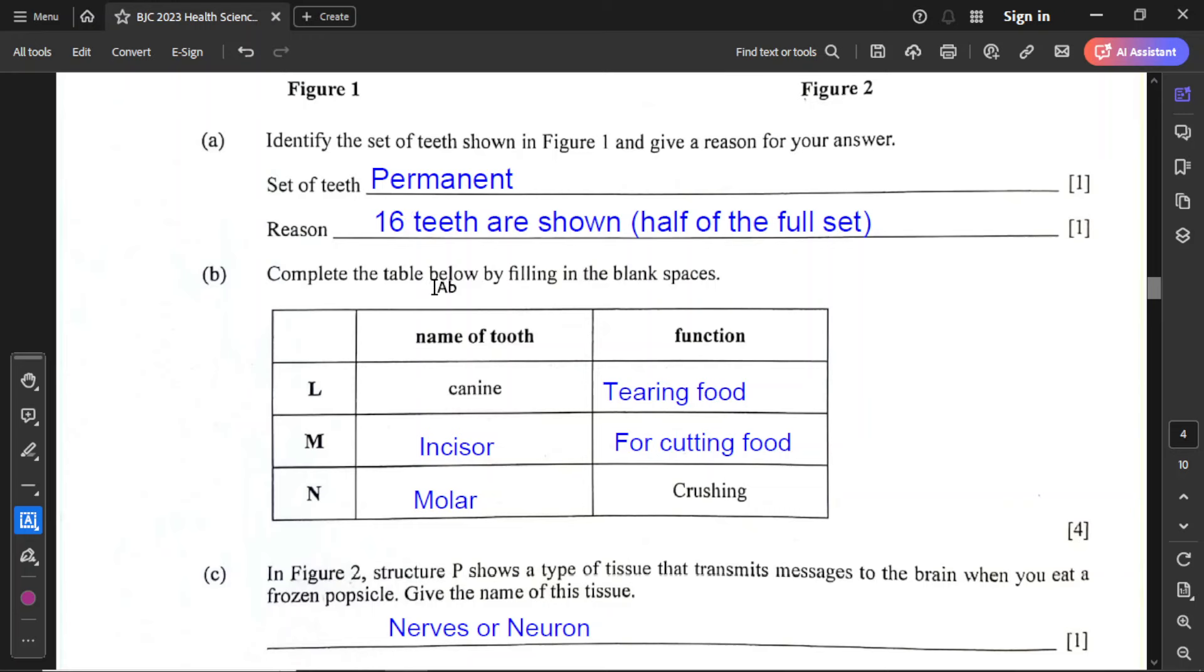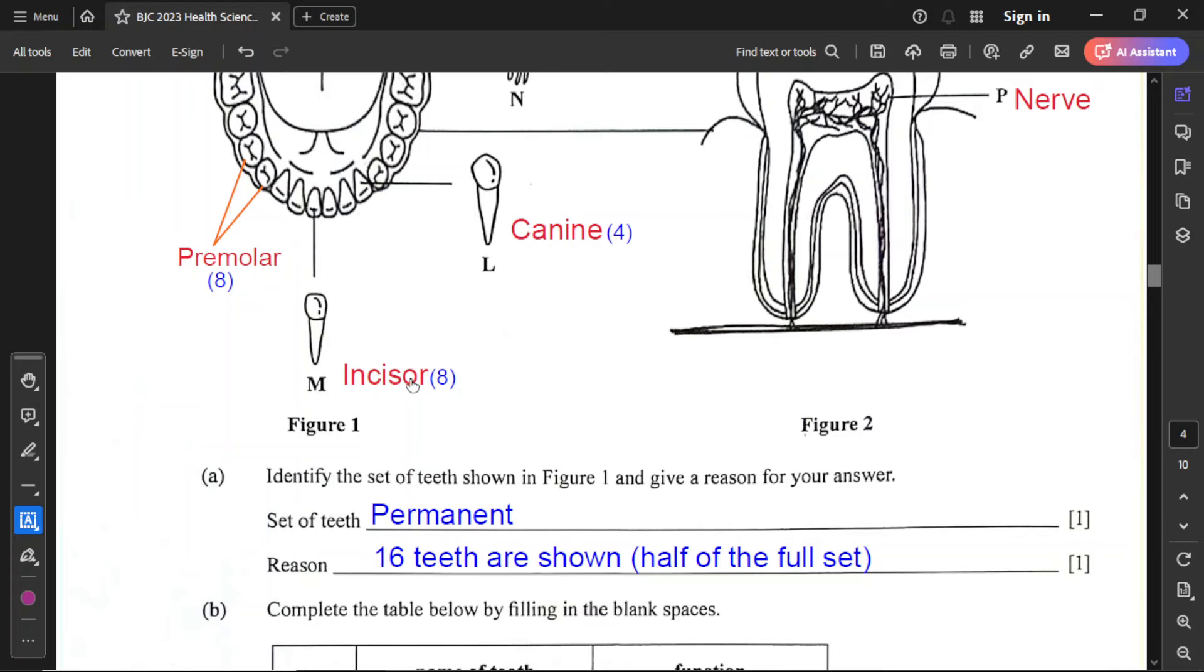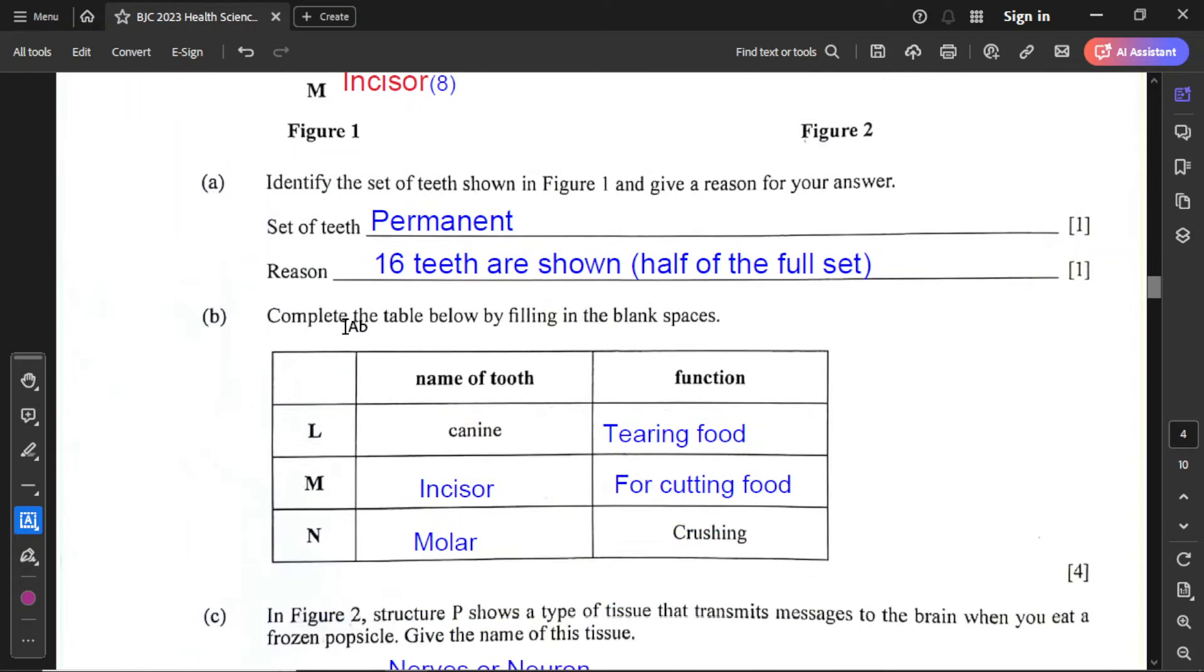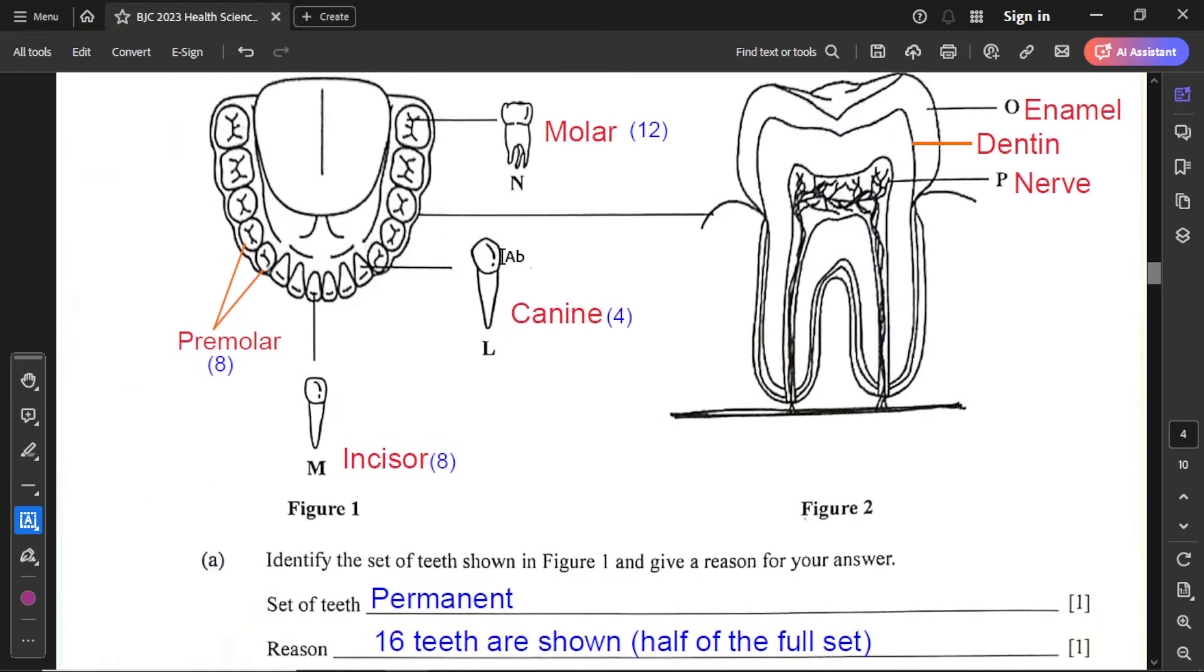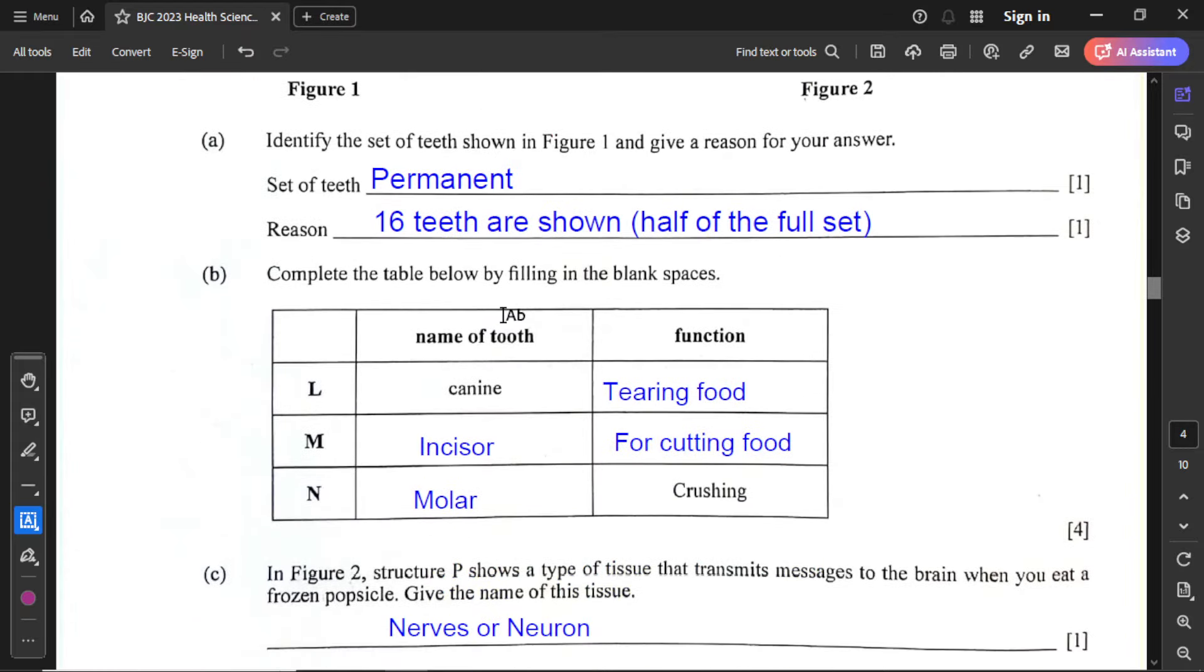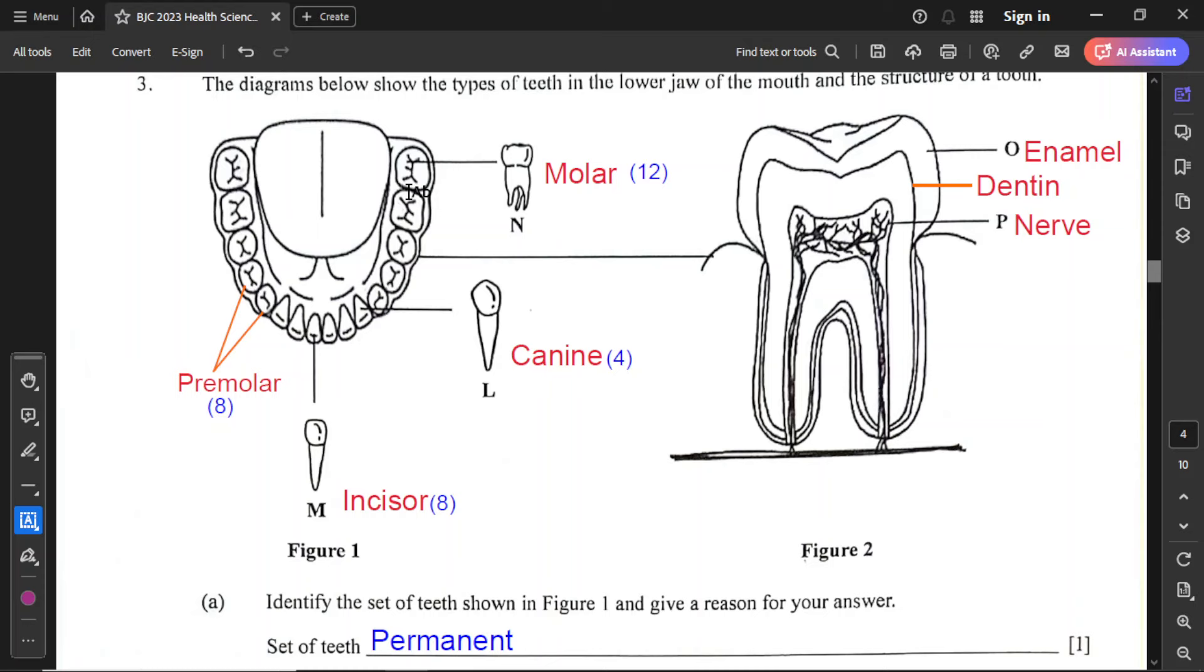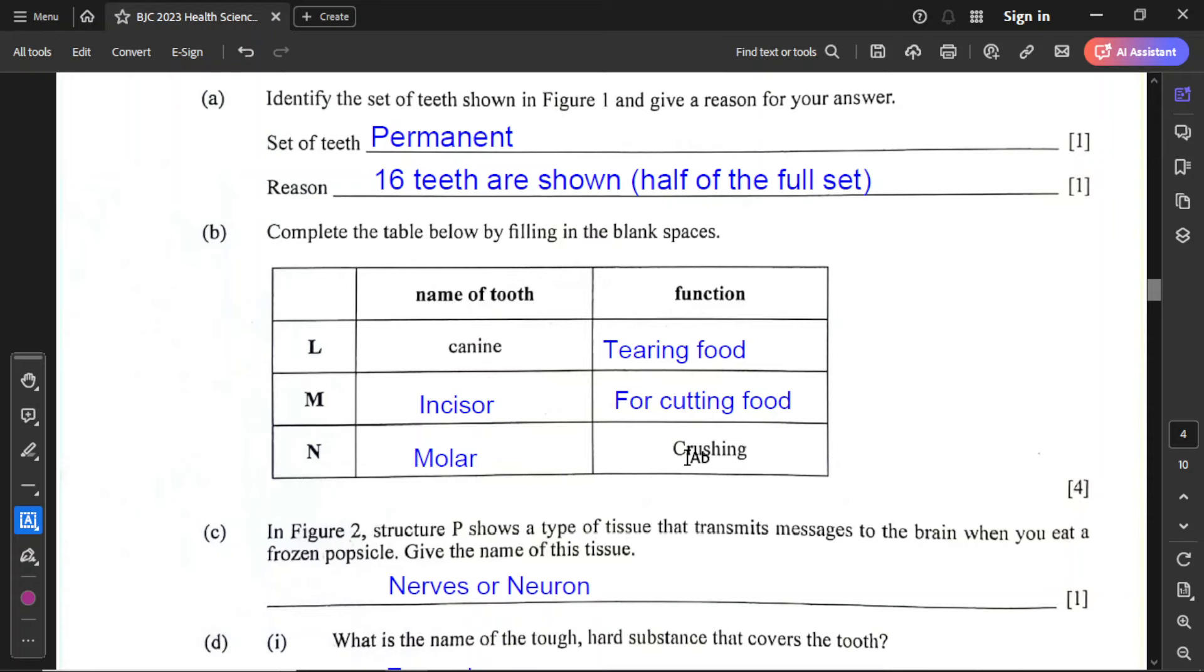For part B, complete the table below by filling in the blank spaces. We have L, which is canine, used for tearing of food. Canines are very pointy teeth. M, as we go back to the diagram, is incisors. Notice they're shaped like a chisel, and incisors are used for cutting of food. And we have N, which are molars. Those are closer to the back, the last set of three on each side. The molars are similar to premolars and look alike, only they're a little bigger. Those are for crushing and grinding of food.